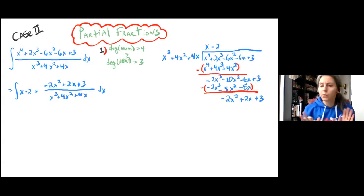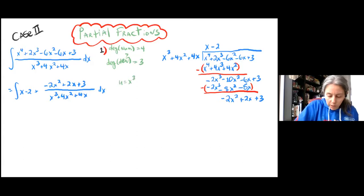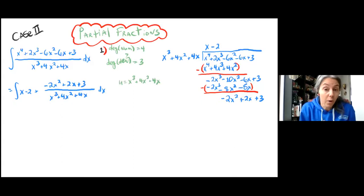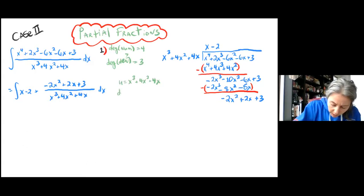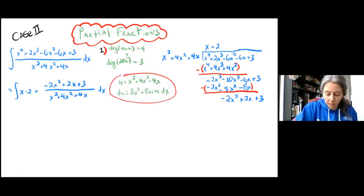Before we go directly into the partial fractions, especially after division, we should always check to see if substitution works — letting u equal the denominator. The question is: is the numerator the derivative of the denominator, or some multiple of the derivative of the denominator? Our du in this case would be 3x squared plus 8x plus 4 dx. The answer is that negative 2x squared plus 2x plus 3 is not a multiple of that du, so this substitution does not work, which means we are going to have to go through with the partial fractions.